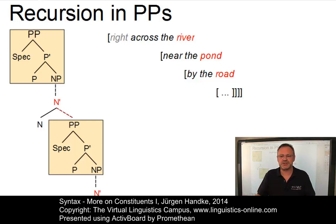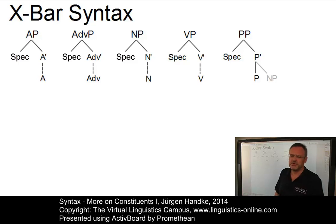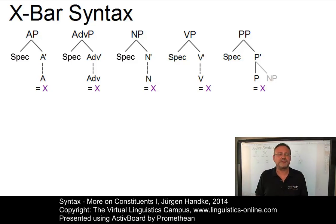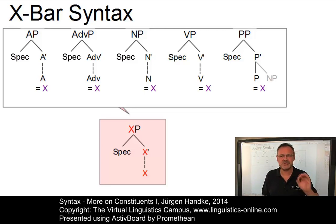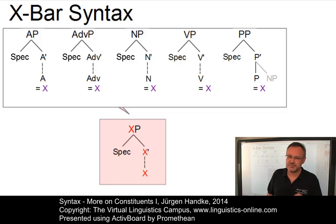Our observations and structures can now be generalized. To make it as general as possible, we replace all heads of all these constituents by a variable, x. So instead of having adjective, we call it x; instead of adverb, x; instead of noun, x; and so on. We can now derive the following principle: any constituent XP has an optional specifier; the daughter of XP is X-bar (written with an apostrophe); X-bar can be expanded recursively; and at the head of the entire constituent is the category x — an adjective, a noun, an adverb, and so on. This scheme has become known as the X-bar syntax scheme.